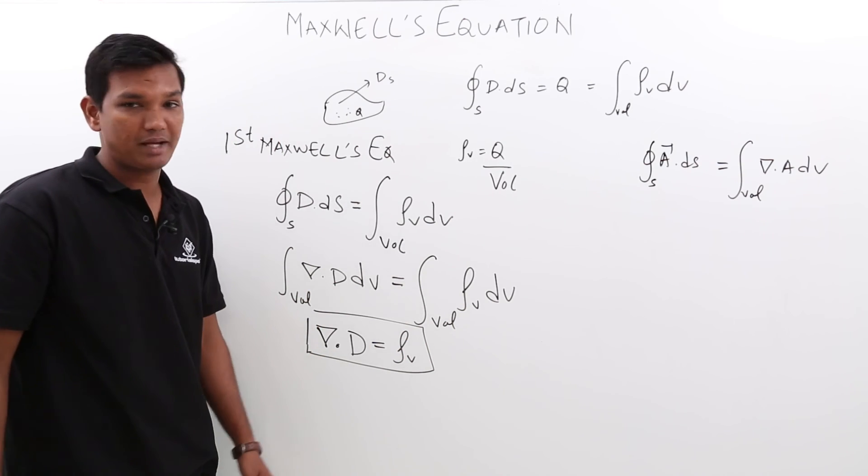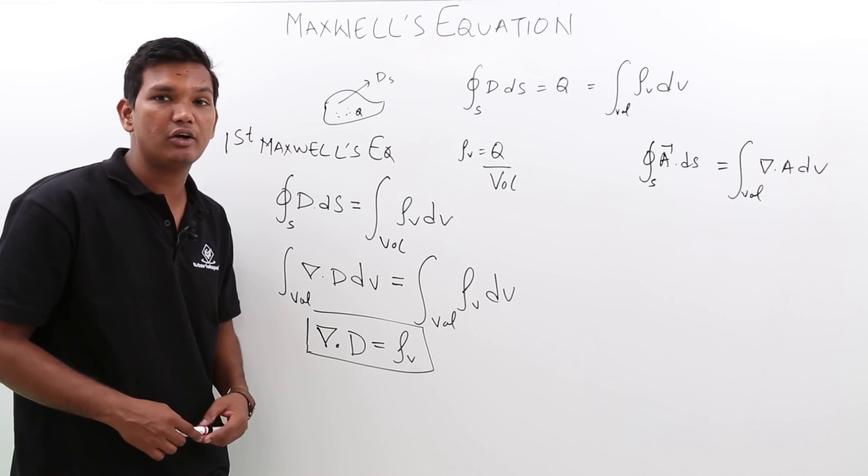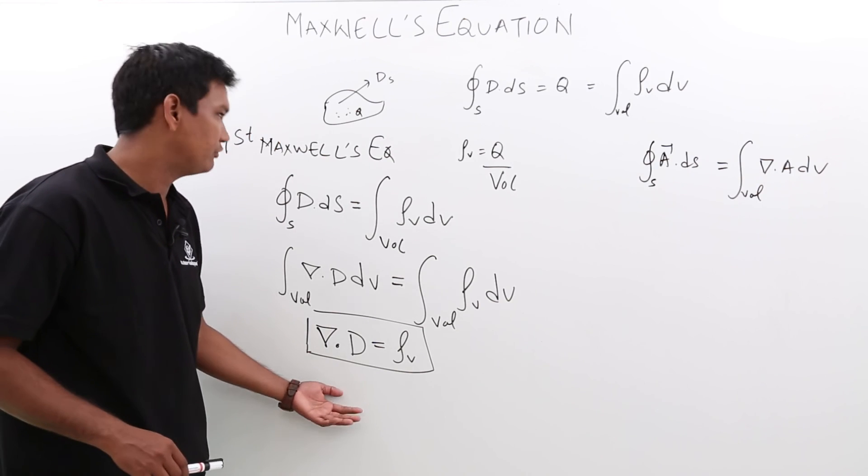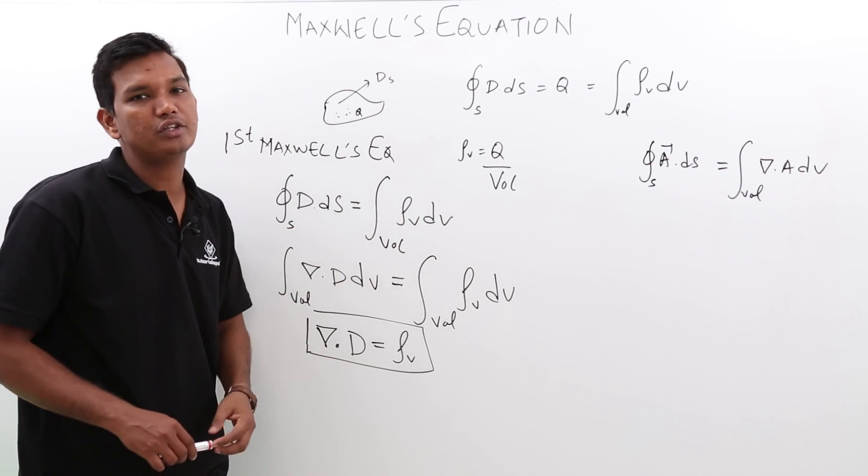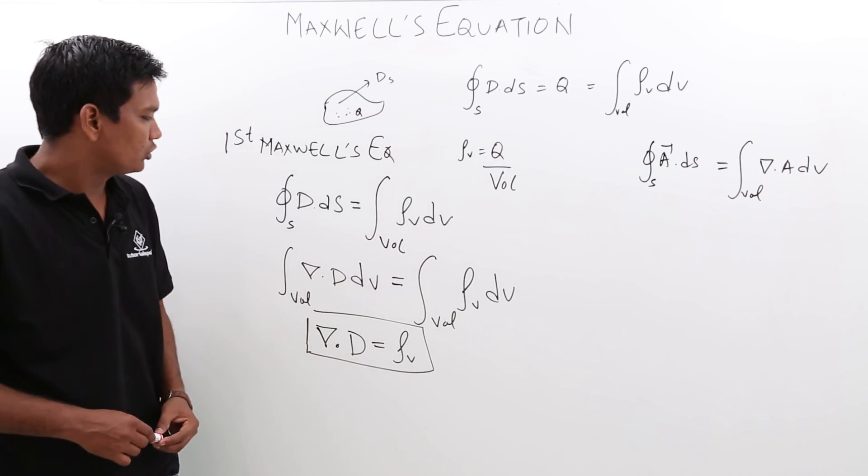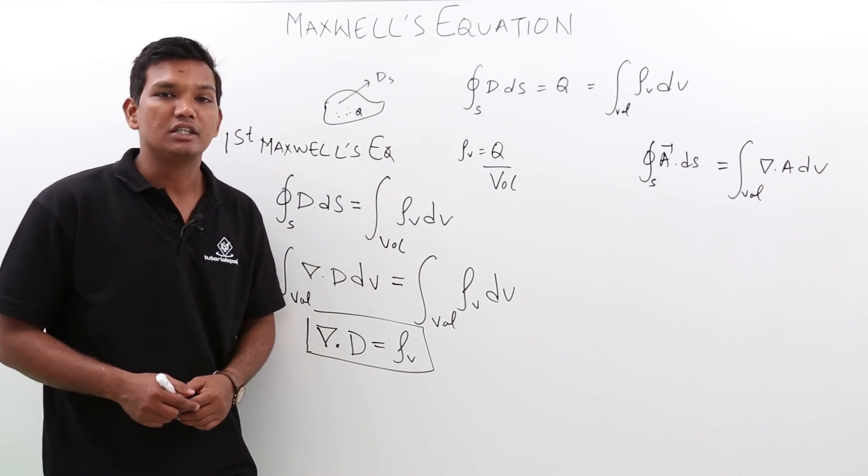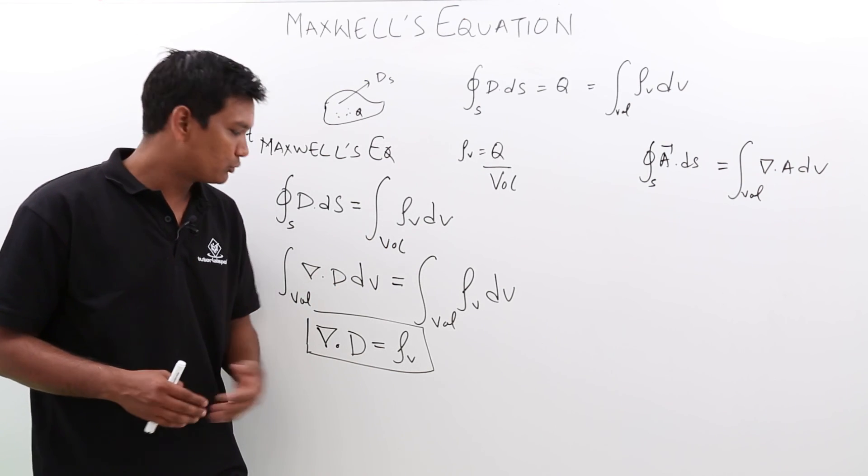So, we have proved the first Maxwell equation, which is del dot D equals rho_v in point form. In integral form, it is the integral of D dot dS equals the integral of rho_v dV over the volume. The important thing to note is the first Maxwell equation has been proved from Gauss law.